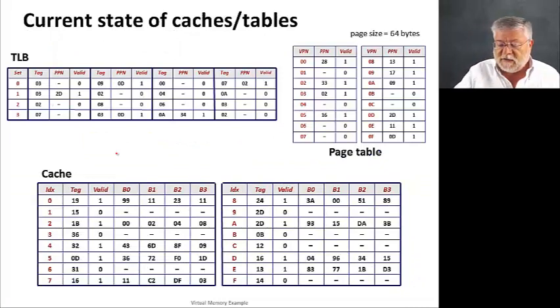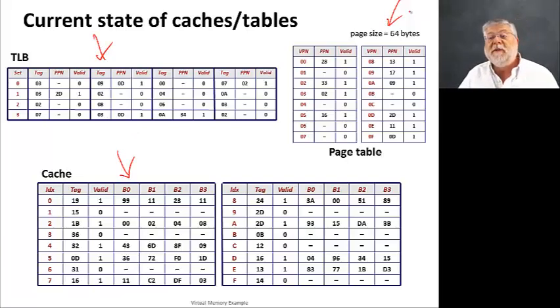and here is the first 16 entries of our page table. Remember, the page table has a total of 256 entries, only showing 16 here. Now, you might want to save this page and have it open in another window as we do some example address translations using the data that we've put into these tables and caches shown on this slide. So, keep this one around, have it open in another window.